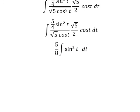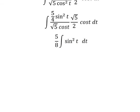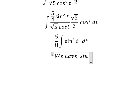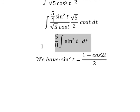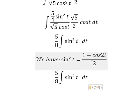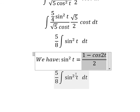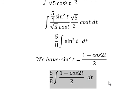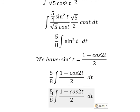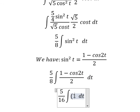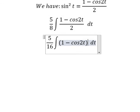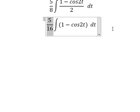Now we apply the formula: sin²(t) equals 1 minus cos(2t) over 2. I will substitute this in, and put the number 2 outside, giving us the simplified integral.